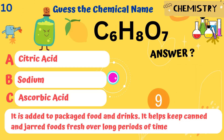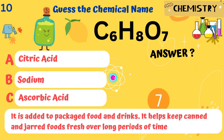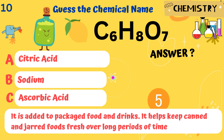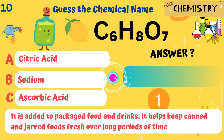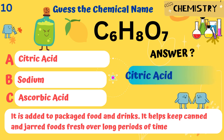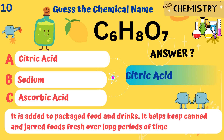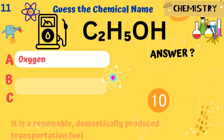C6H8O7. It is added to packaged food and drinks. It helps keep canned and jarred foods fresh over long periods of time. Answer: Citric acid.